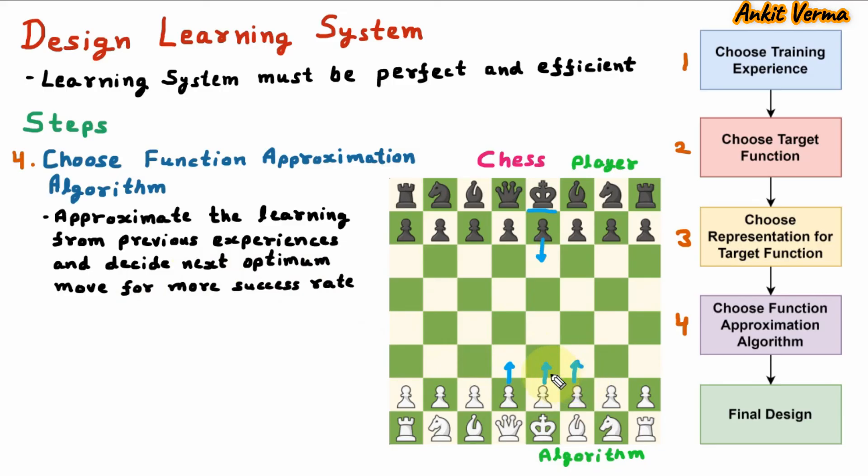So here, the three legal moves are there, and based on the experience and their approximation, one move is decided as the optimum move. And this optimum move will give the maximum success rate.